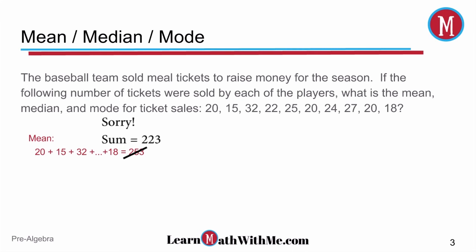And to get the mean or the average, we take the sum and divide that by the number of players that sold tickets, which was 10, and so we get a mean or average of 25.3.